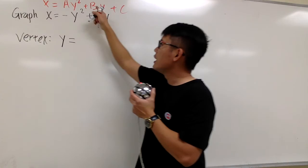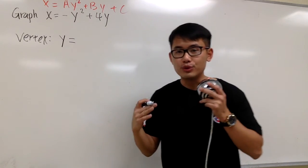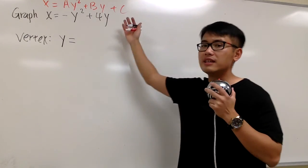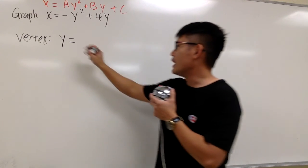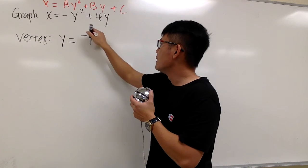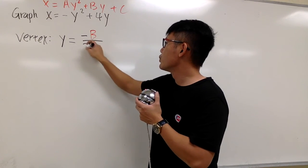And you see, I'm using capital A, B, and C. It's because I want to just emphasize this is the sideways situation. But the vertex formula is the same. We have negative B over 2A.